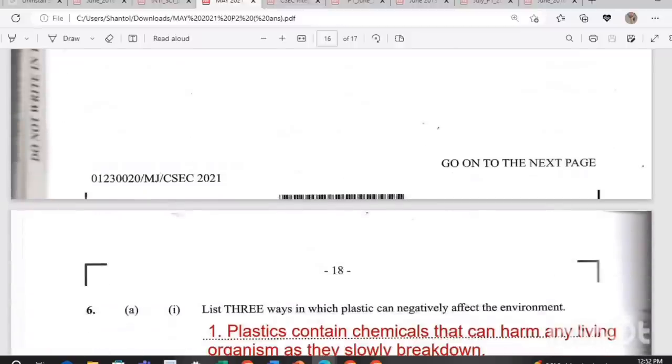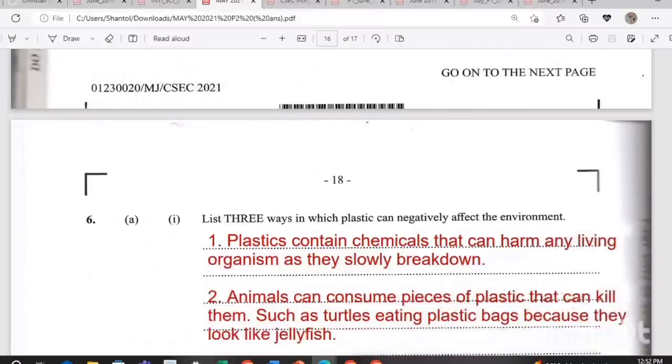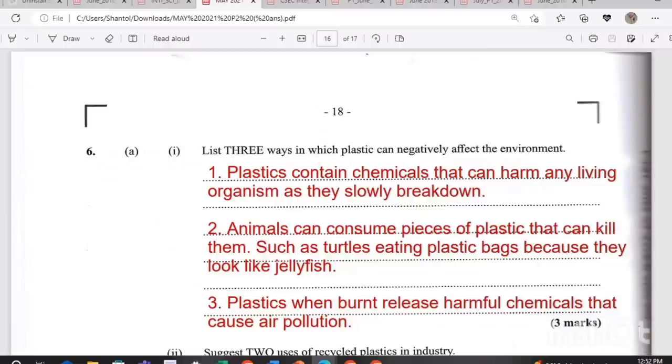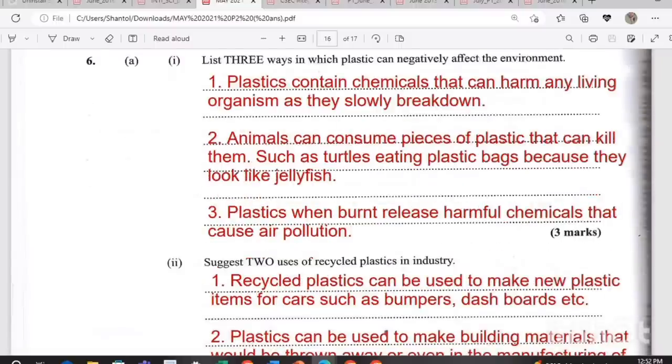Question six. List three ways in which plastic can negatively affect the environment. Plastics contain chemicals that can harm any living organism as they slowly break down. Animals can consume pieces of plastic that can kill them, such as turtles eating plastic bags because they look like jellyfish. Plastics, when burnt, release harmful chemicals that cause air pollution. Suggest two uses of recycled plastics in industry. Recycled plastics can be used to make new plastic items for cars such as bumpers, dashboards, etc. And plastics can be used to make building materials or in the manufacturing of furniture.